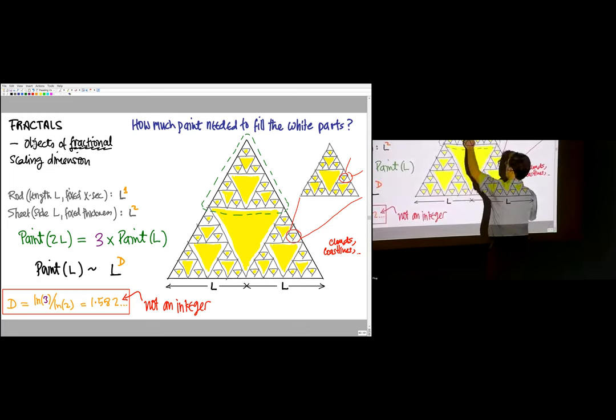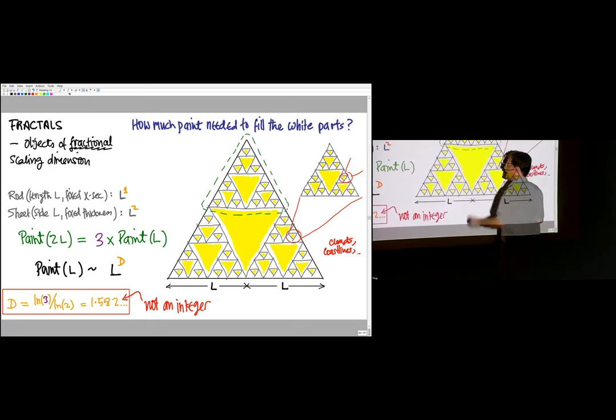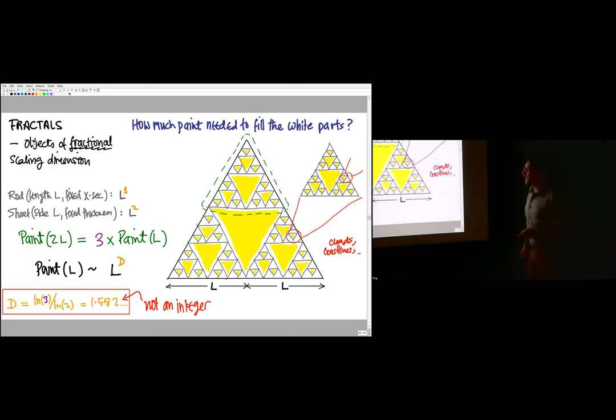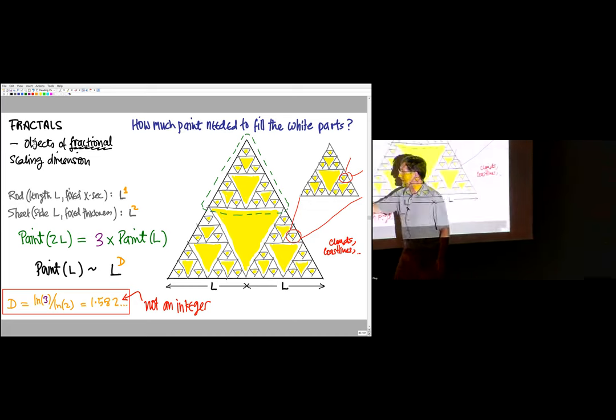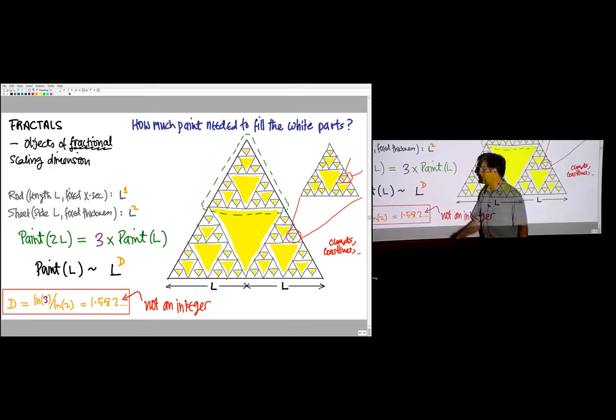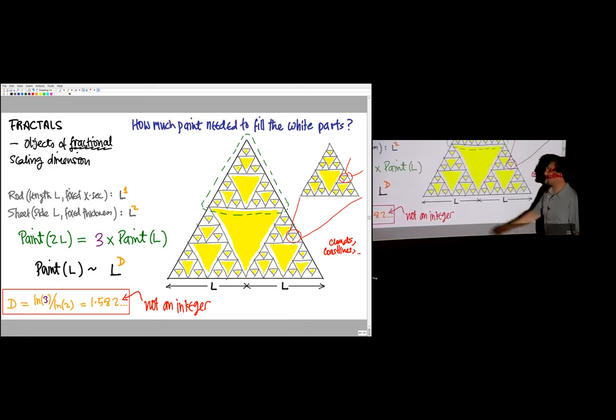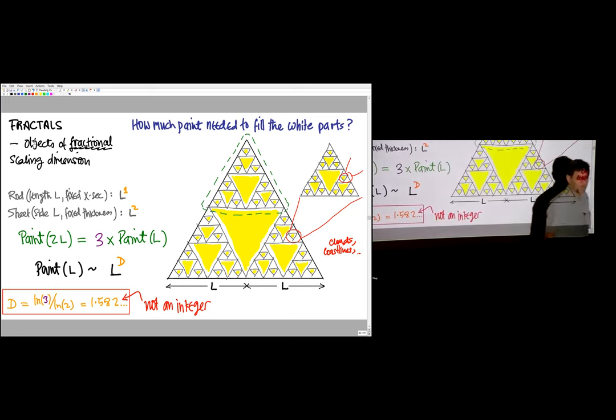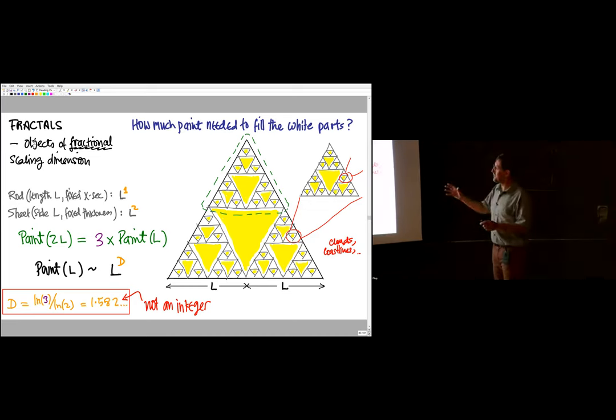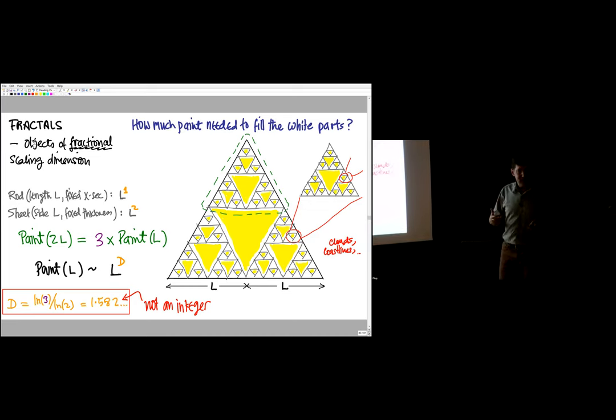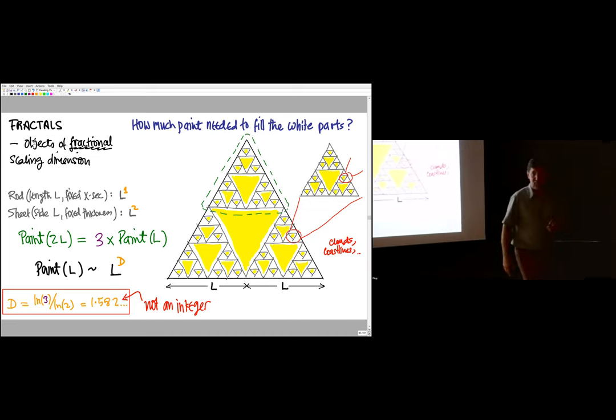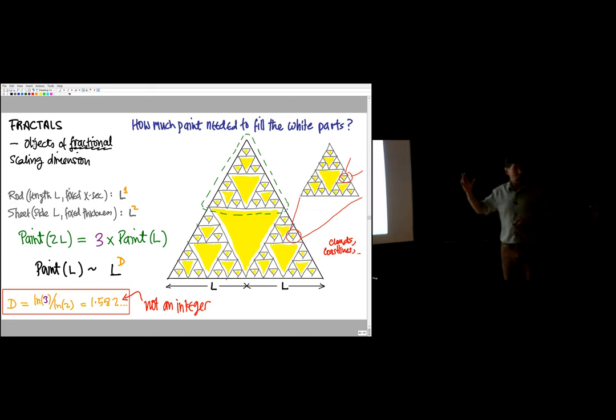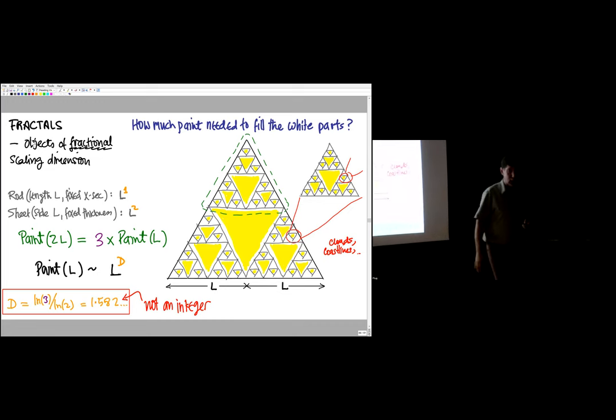Now we know that the amount of paint to paint the white areas on the side-2L Sierpinski's gasket is three times—one, two, three—the amount of paint in each of these. It's not terribly hard, although we don't need to do it now, to convince yourself that means the amount of paint goes like the side to a power. The power is not one for a rod or two for a sheet, but it turns out to be a ratio of logarithms, and it's about one and a half. So this odd object is one of the first objects known in mathematics to have a dimension that is not a whole number. That's Sierpinski's gasket. Ideas like this pop up very beautifully all over physics and that has led to a number of Nobel prizes.